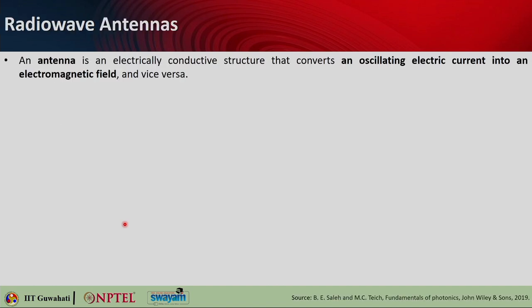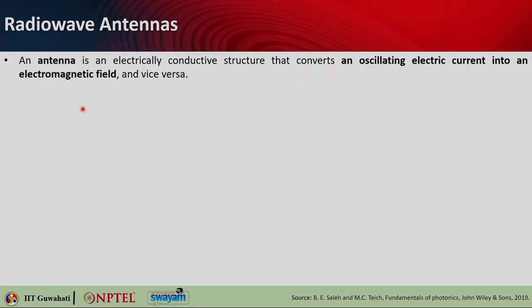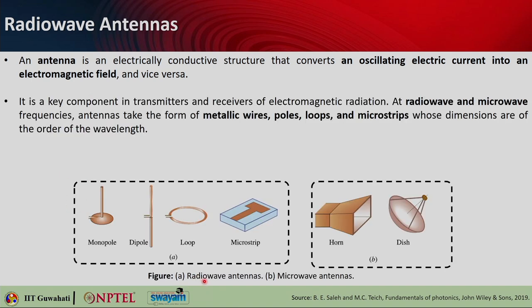Radio wave antennas have been in existence for centuries. These antennas are basically an electrically conductive structure that can convert an oscillating electric current into an electromagnetic field and vice versa. A transmitter converts oscillating electric current into electromagnetic waves or radiation, and a receiver antenna does the opposite. Here are some examples of radio wave and microwave antennas.